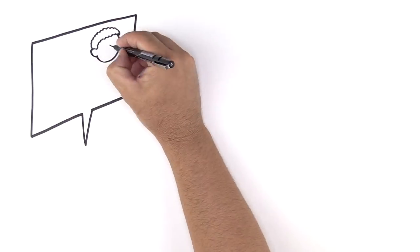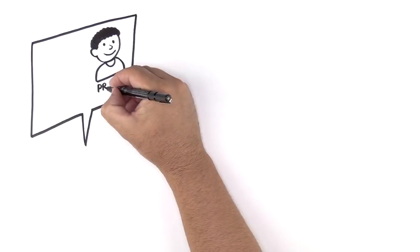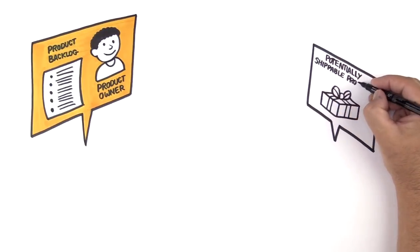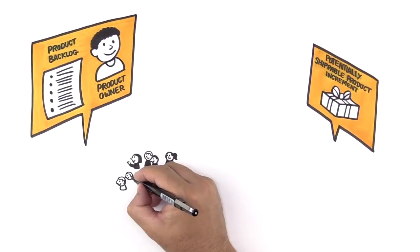LeSS is multi-team Scrum. There's one product owner providing vision and one adjustable prioritized list of customer-centric items: the product backlog. We want one integrated shippable product increment every sprint—every one to four weeks. Multiple teams develop this product, one shared sprint at a time.